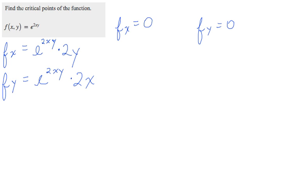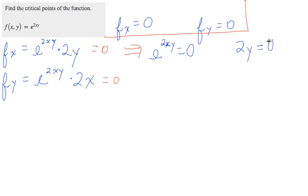Now to find where the critical values are, we're going to set both first partial derivatives equal to zero and solve. Okay, let's do the first one. It's already essentially factored. It's an equation that's equal to zero. So it has solutions where both e to the 2xy equals zero and where 2y equals zero.